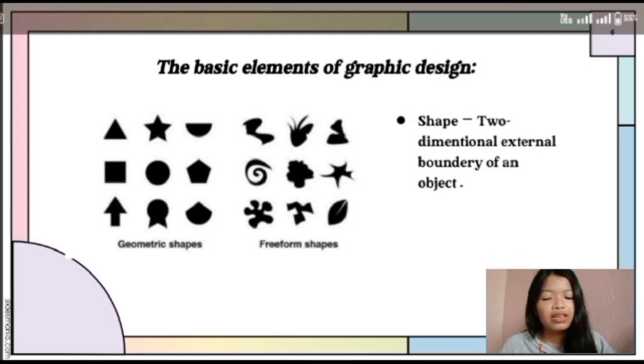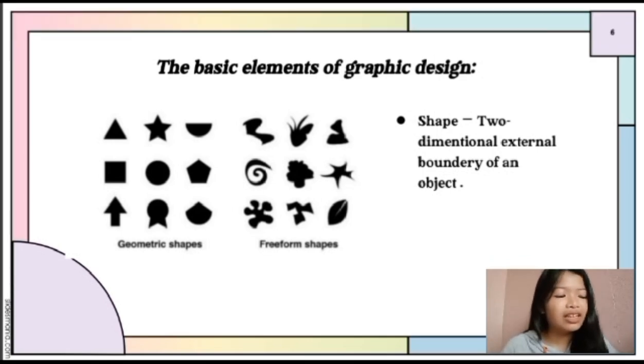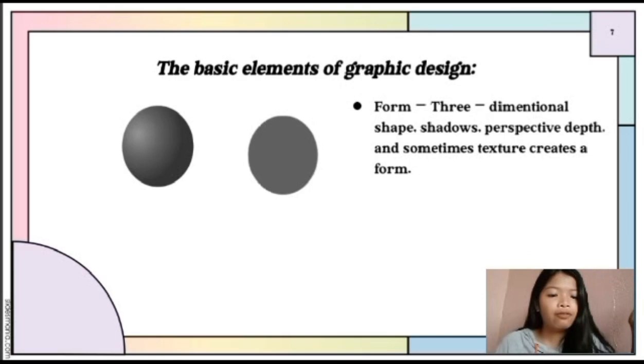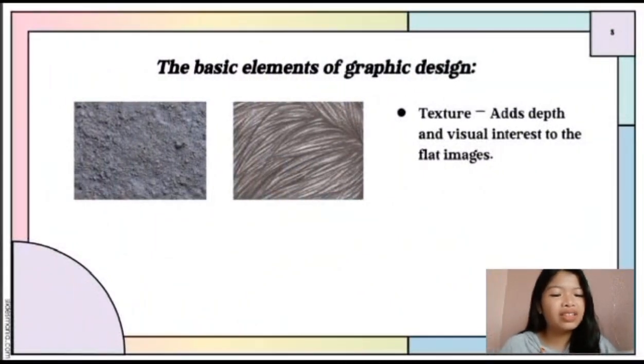What is a shape? A shape is a two-dimensional external boundary of an object. Examples include geometric shapes and free-form shapes. Next is form. A form is a three-dimensional shape, while texture refers to the physical qualities of the surface of an object.